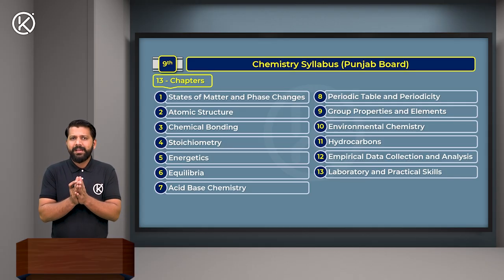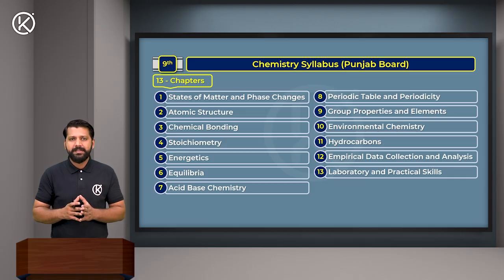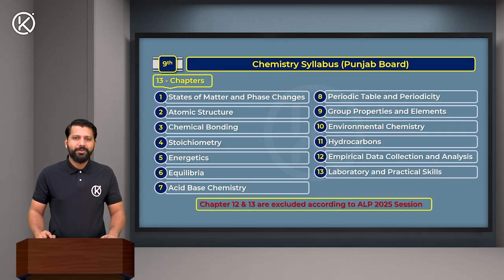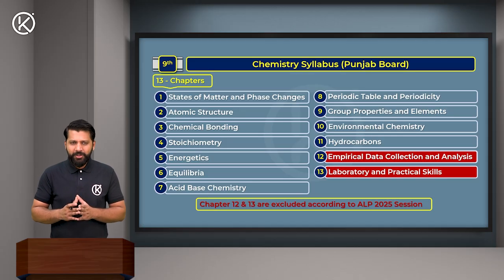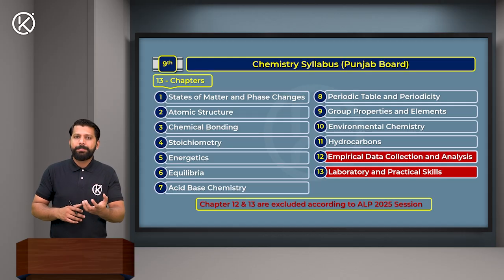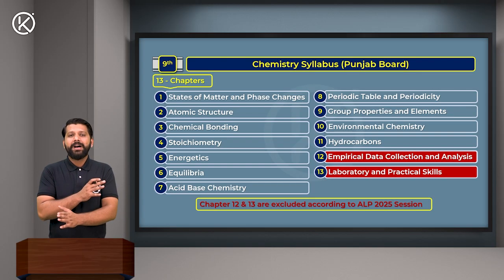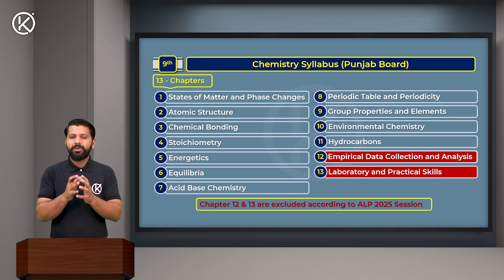Now we need to identify which chapters and topics are excluded from our syllabus this year, meaning there will be no exam questions from them. Chapters 12 and 13 are excluded according to the ALP 2025 session. So we will only concentrate on the 11 remaining chapters. However, even within those 11 chapters, there are some topics and exercise parts that are also excluded.